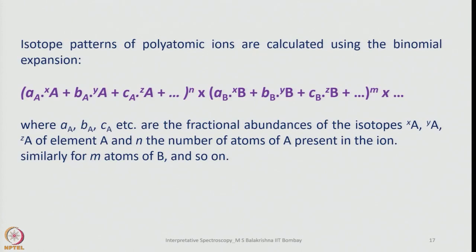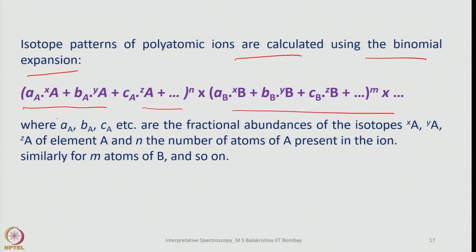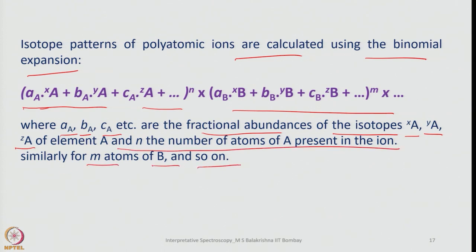Isotope patterns of polyatomic ions are calculated using binomial expansion. If we have more atoms with more isotopes, the isotopic pattern in the molecular ion peak can be calculated using binomial expansion. The fractional abundances AA, BA, CA etc. are the fractional abundances of the isotopes XA, YA, ZA of element A, where n is the number of atoms of A present in the ion. Similarly for m atoms of element B — if we have more than 2 or 3 different atoms with different isotopes, we can use this formula.